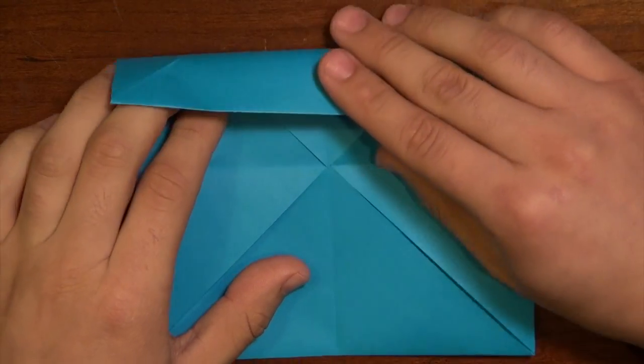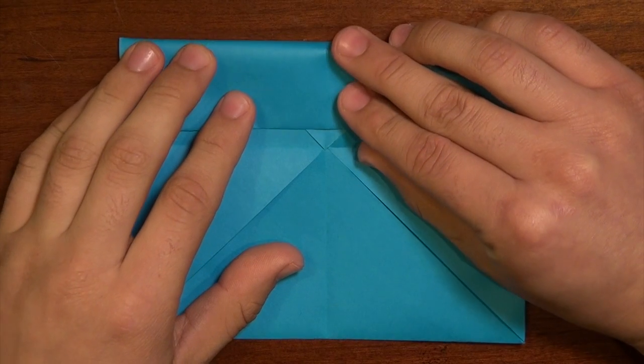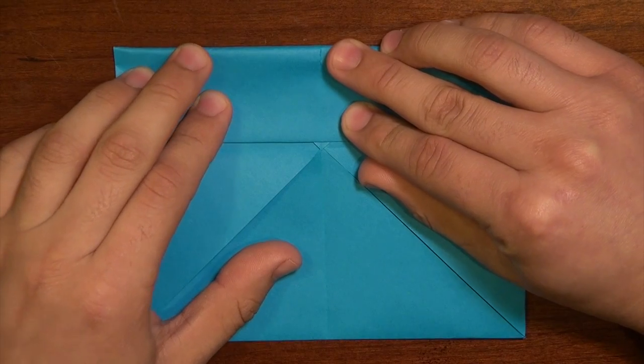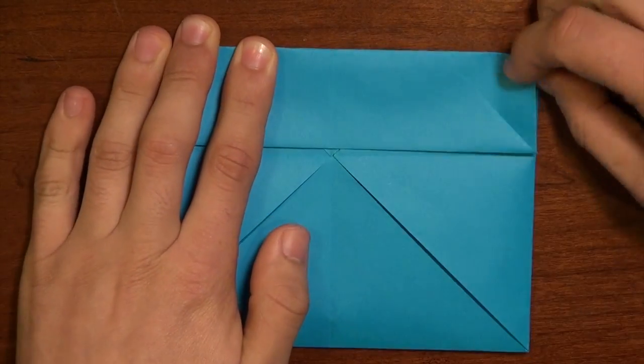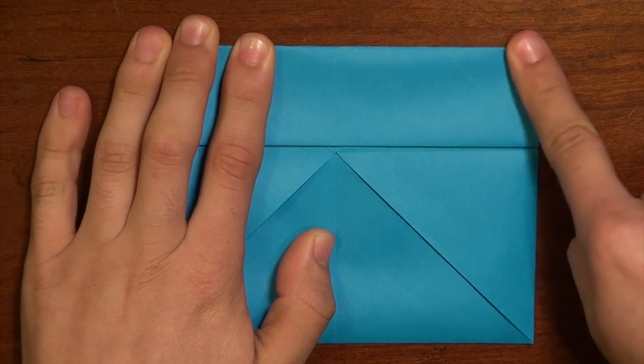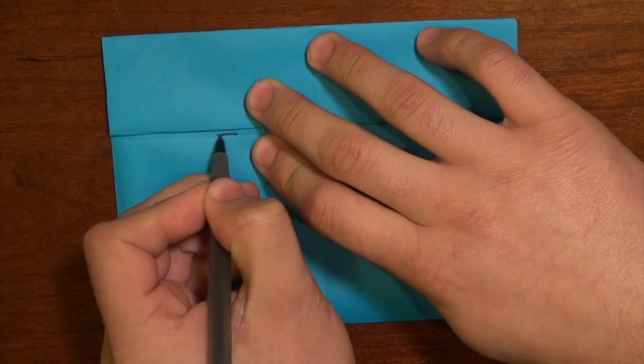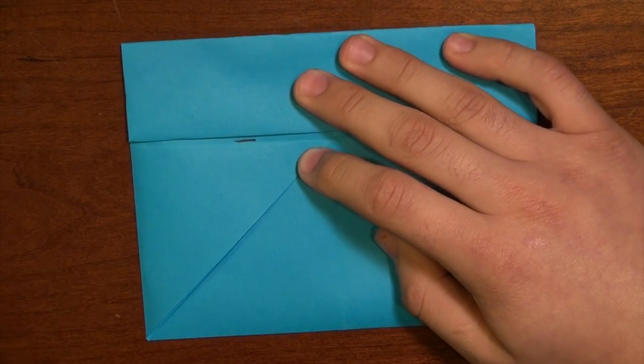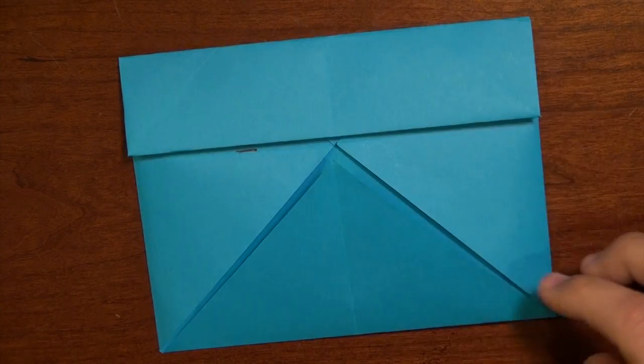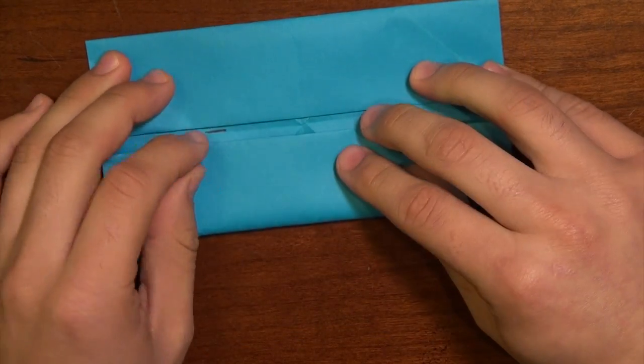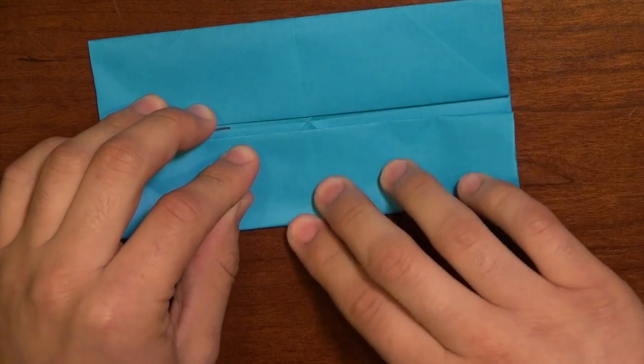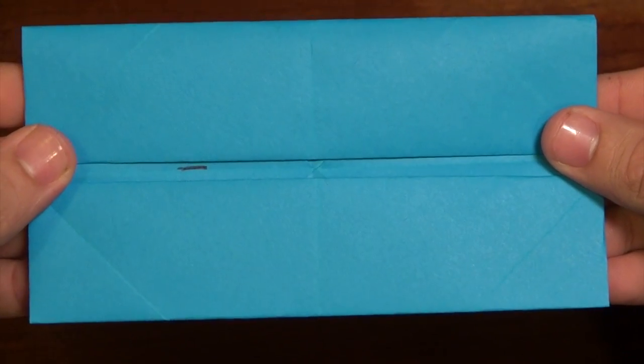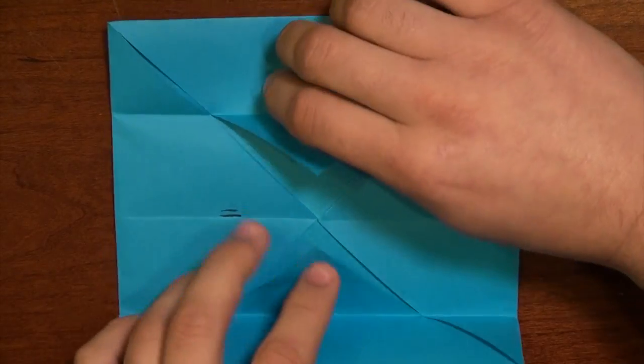I'll take the top edge, fold it in next to that middle line, leaving a little bit of space. Right about there should be good. And you might need to just round it off on the corner here. So there's the middle line. And there's the edge, maybe about an eighth of an inch. Do the same with the bottom. So you can see there's a little space there left in the middle. And then do the same with the other two edges.